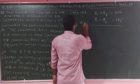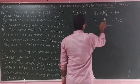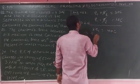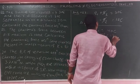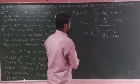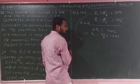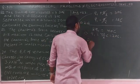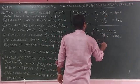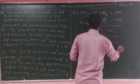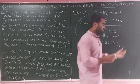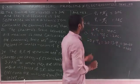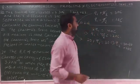Adding the two equations: Q1 plus Q2 plus Q1 minus Q2 gives 2Q1 equals 40, so Q1 equals 20 coulombs. Substituting back into equation 1: Q1 plus Q2 equals 30, so 20 plus Q2 equals 30, giving Q2 equals 10 coulombs.